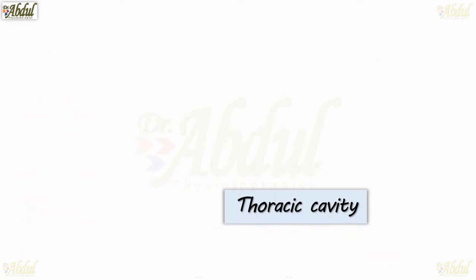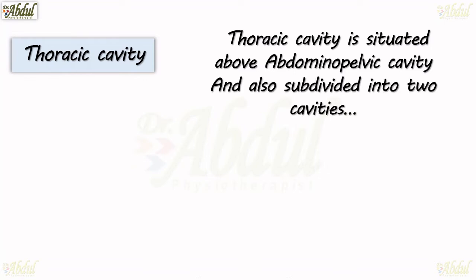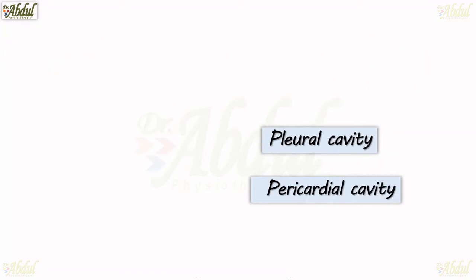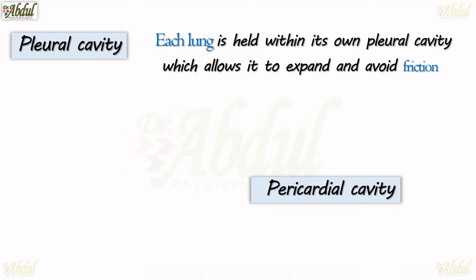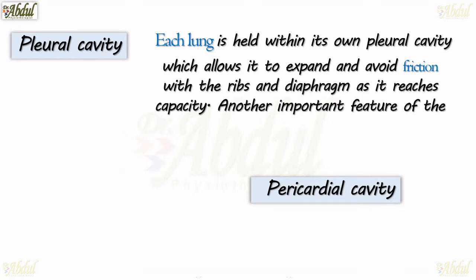The thoracic cavity is situated above the abdominopelvic cavity and is also subdivided into two cavities: the pleural cavity and the pericardial cavity. Each lung is held within its own pleural cavity, which allows it to expand and avoid friction with the ribs and diaphragm as it reaches its maximum capacity.